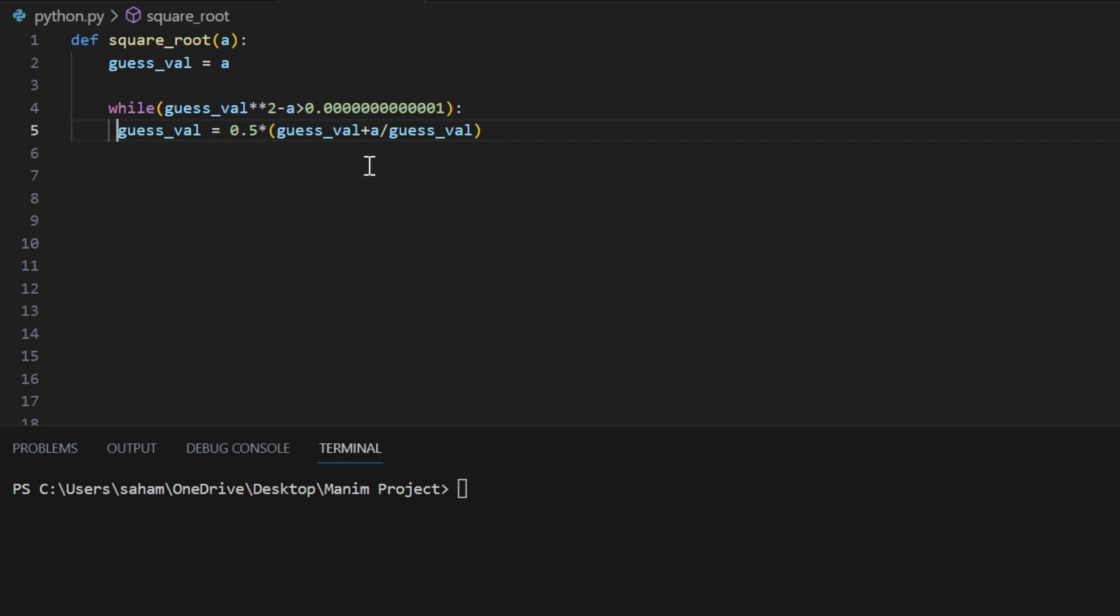In my case, I want the answer to be precise over 10 decimal places. So if guess² - a is still bigger, we keep going. Finally, we return the ultimate guess value.